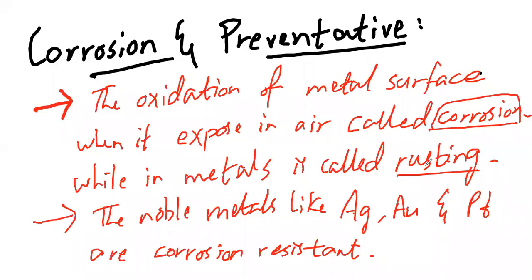Now talking about what is corrosion and its prevention. Corrosion definition is: when the metal surface is kept in air for a long time and due to oxidation, the metal gets corroded. This is called corrosion. Oxidation of metal surface when exposed in air is called corrosion, while in metals it's called rusting. The metals which are anti-corrosion or corrosion resistant, which do not cause corrosion, are these noble metals like Ag, Au, and Pt.